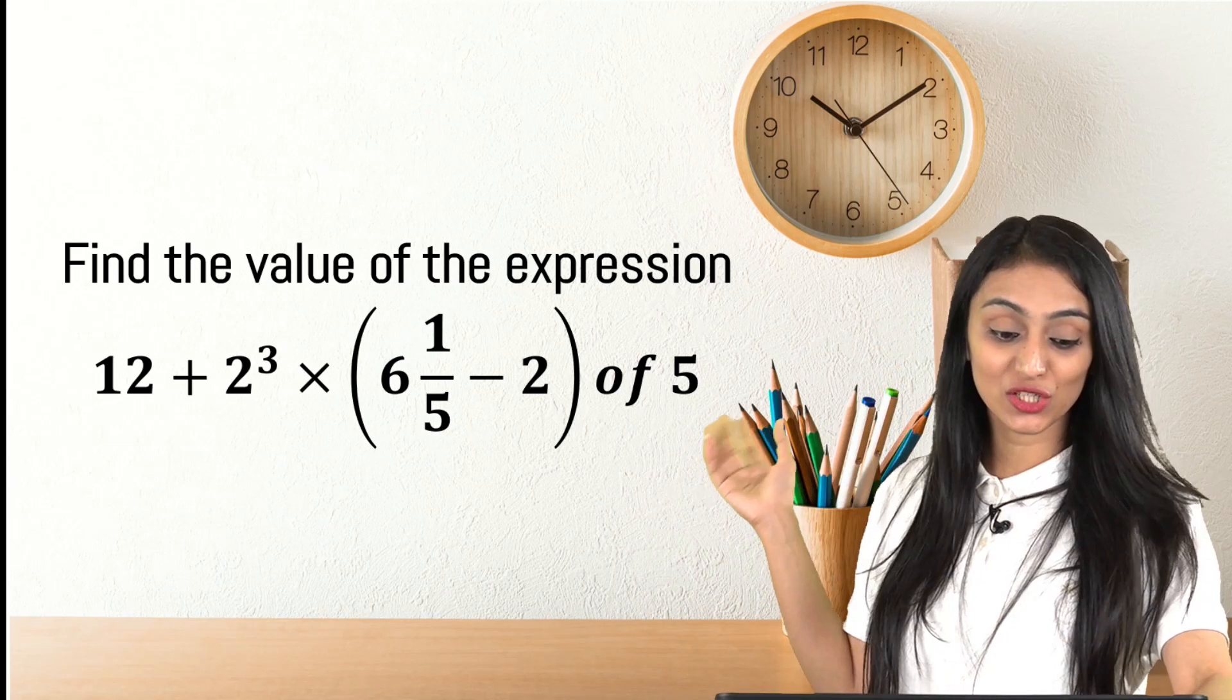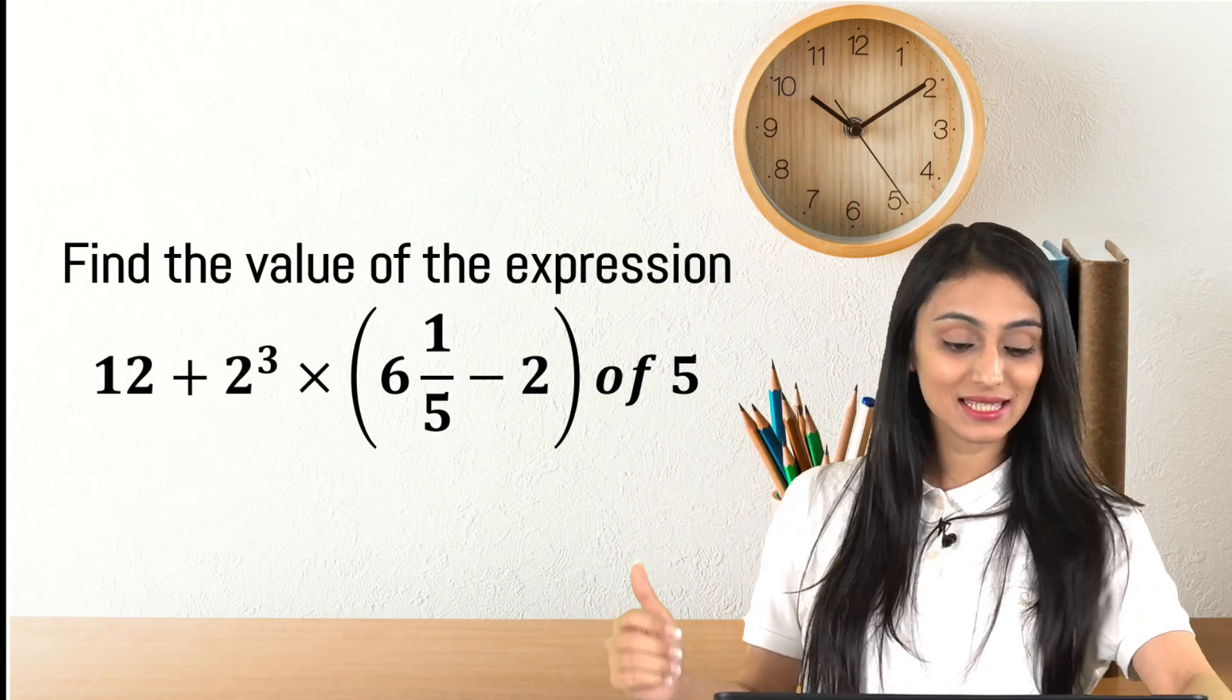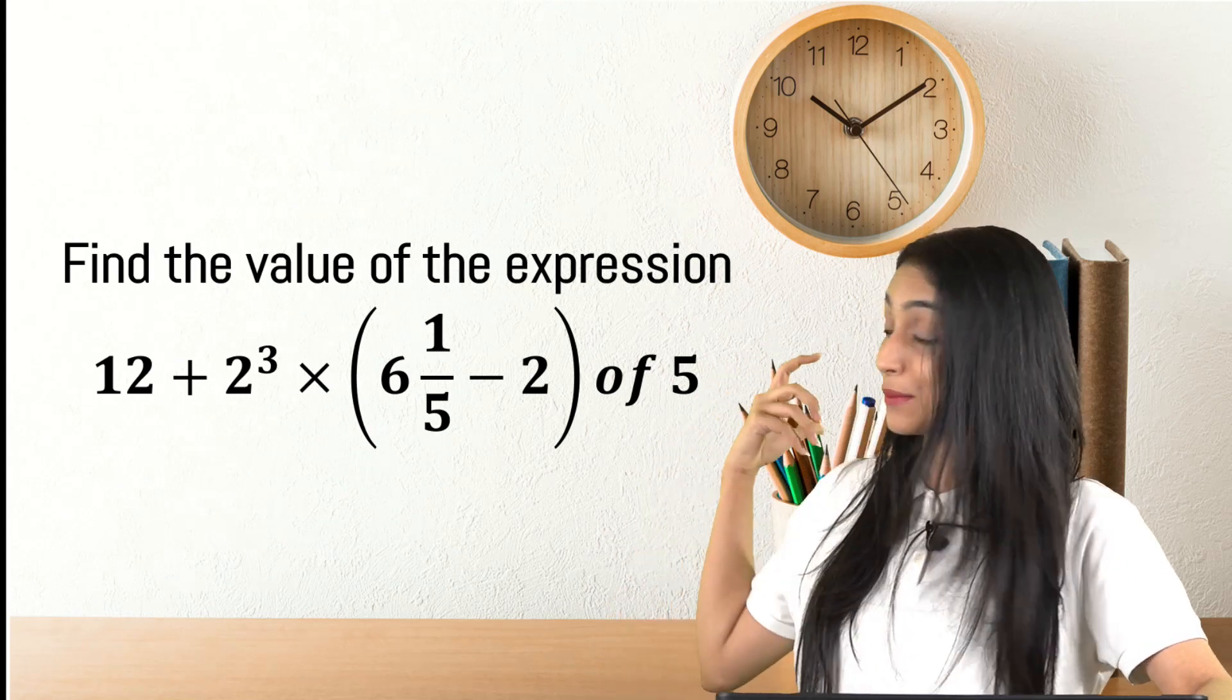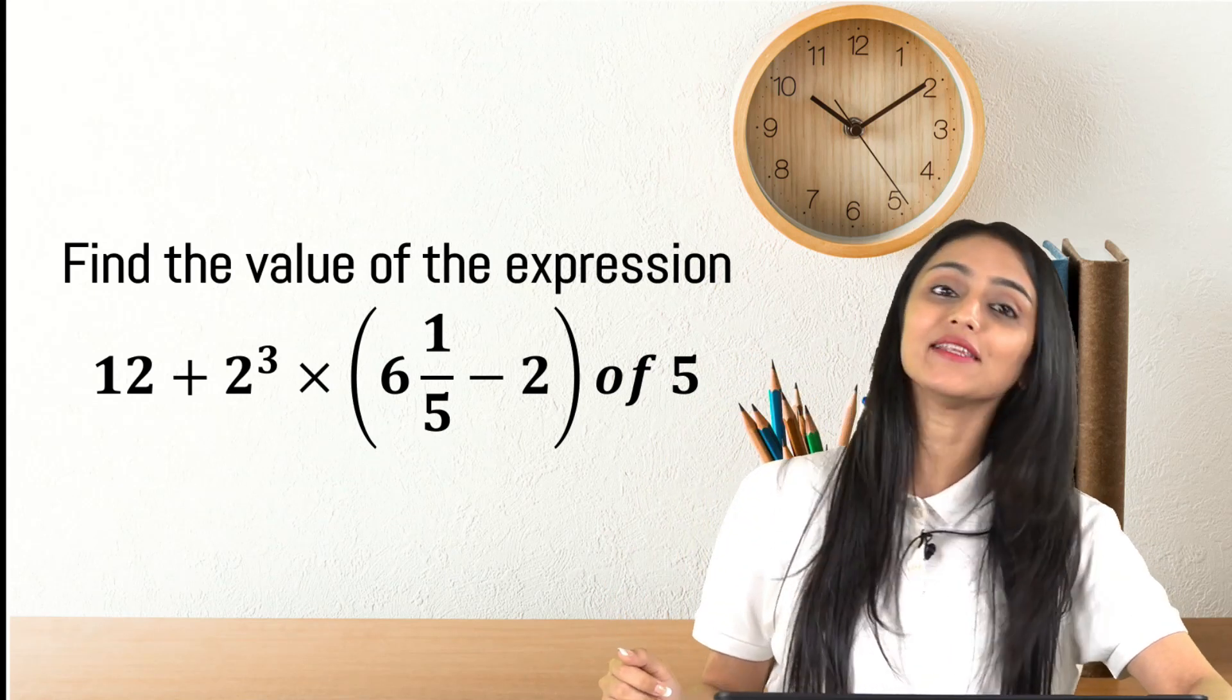Like today we have this expression 12 plus 2 cubed times 6 and 1 by 5 minus 2. This is in the bracket of 5. Find the value of the expression.